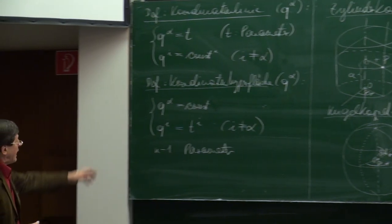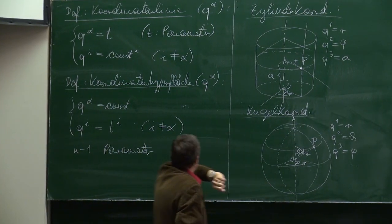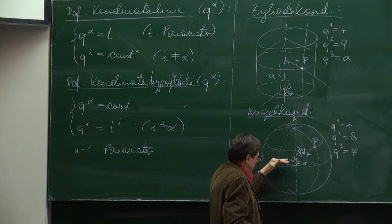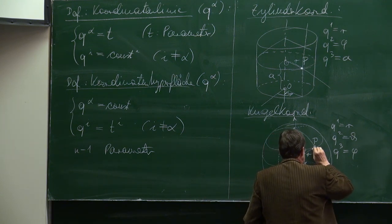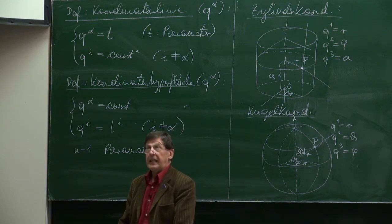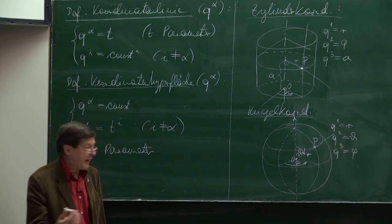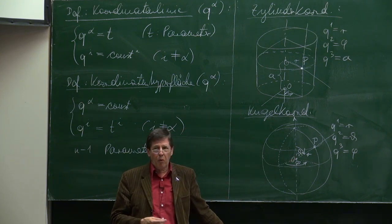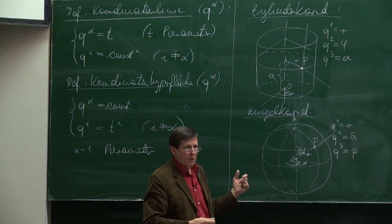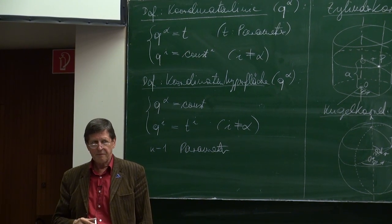Die Q1-Koordinatenlinie, die R-Koordinatenlinie: R ist der Parameter, Theta und Phi sind konstant. R variiert – das ist diese Linie, die so herauszeigt. Die sticht senkrecht aus der Erde heraus, nach allen Richtungen – das ist ein ganzer Igel, der nach allen Richtungen herausgeht. Wenn in der Mitte eine Punktladung ist und man das elektrische Feld betrachten will, haben alle Feldvektoren in diesem Koordinatensystem nur eine Komponente in Radialrichtung.